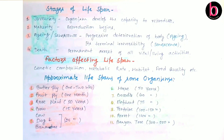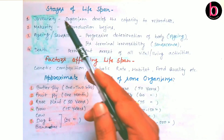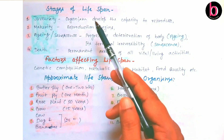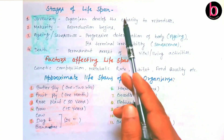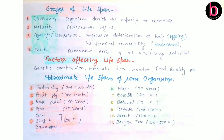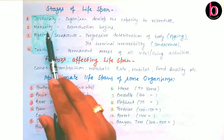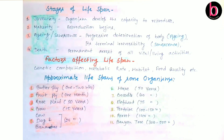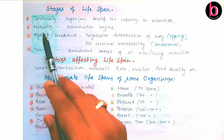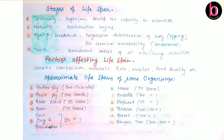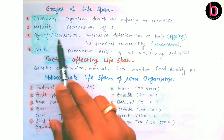There are four stages in the life span of any organism. The first is juvenility — the period of life before the organism is capable of producing gametes. The second is maturity — when reproduction begins, marked by the start of gamete formation.